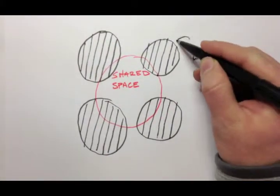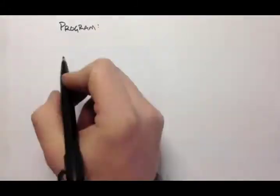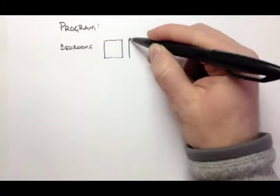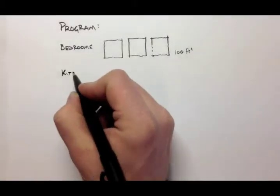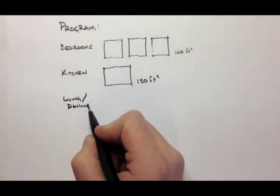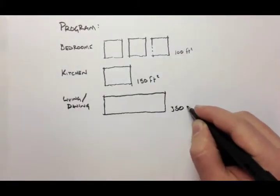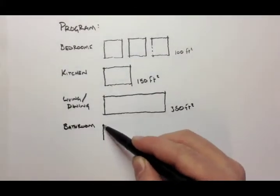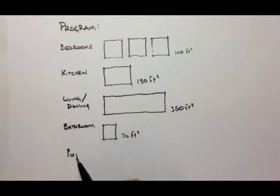Each of these units will be made up of the same set of program: three bedrooms, each around 100 square feet, a kitchen around 150 square feet, a living and dining space with a total of 350 square feet, a bathroom unit of 70 square feet, a puja, and a stoop on the front and the back of the house.